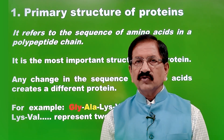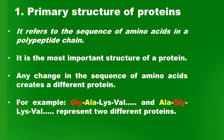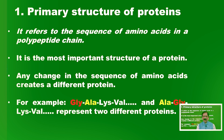First of all, what do we mean by primary structure of a protein? It refers to the sequence of amino acids in a polypeptide chain, and it is the most important structure of a protein. For example, if glycine is attached with alanine, then lysine and valine — if we change the sequence of amino acids in the polypeptide chain, say glycine, lysine, and valine — then these would be different proteins.